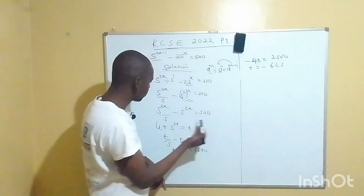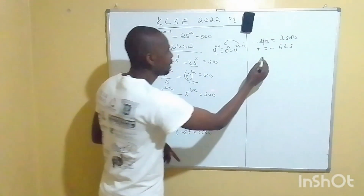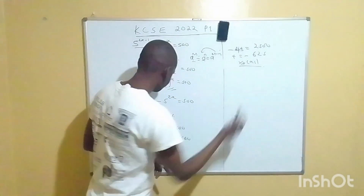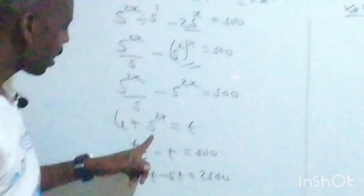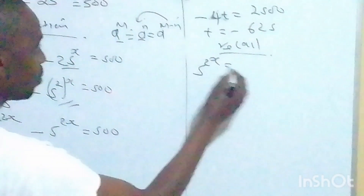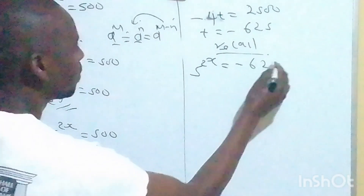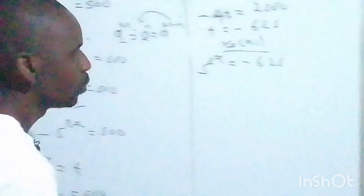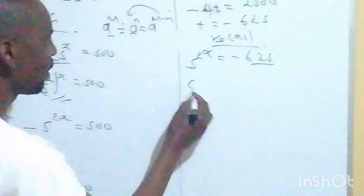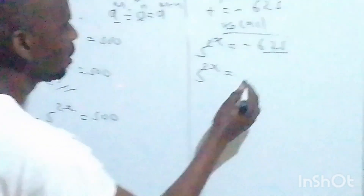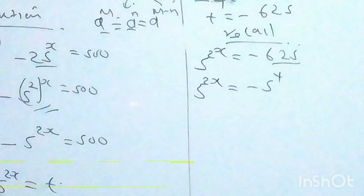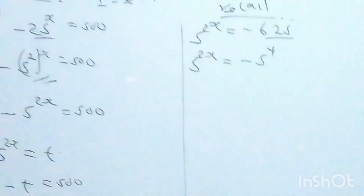But we were not asked to find t — we want to find x. So we recall that 5^(2x) equals t, which means 5^(2x) is equal to negative 625. We can write negative 625 as negative 5^4.